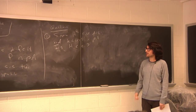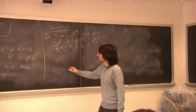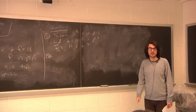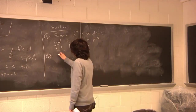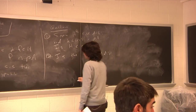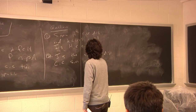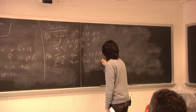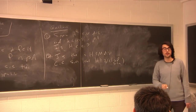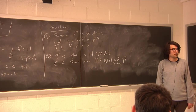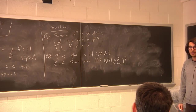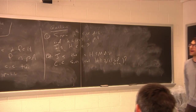An answer to that question has important consequences for other areas of geometric group theory. The next question asks what types of groups can convex co-compact subgroups of mapping class groups be. In particular: does there exist a subgroup of the mapping class group that is convex co-compact and isomorphic to the fundamental group of a closed surface? Can you have convex co-compact surface subgroups of mapping class groups?